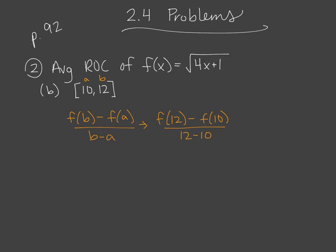So let's plug in 12 into our function. When we plug 12 into our function, we'll get 4 times 12, which is 48 plus 1. So that is the square root of 49. Then when we plug 10 into our function, we'll get 40 plus 1. So that would end up being 41 under there.